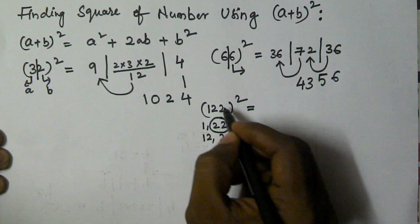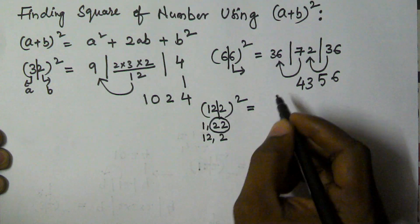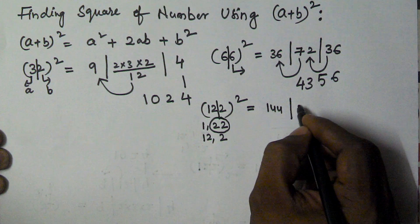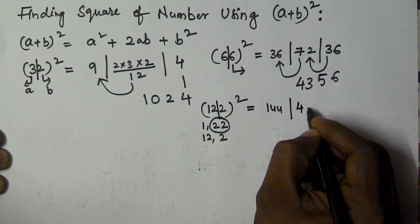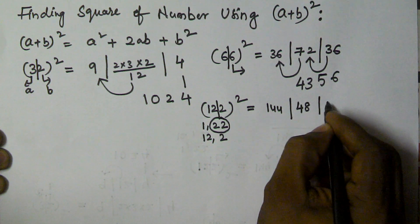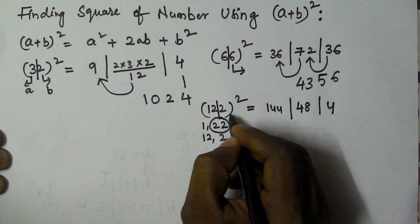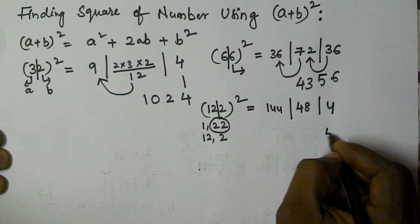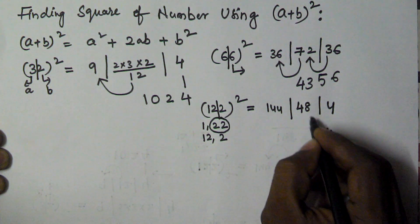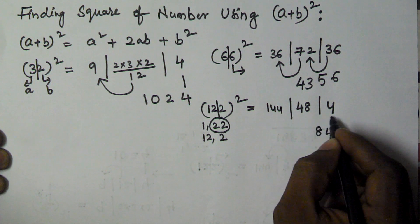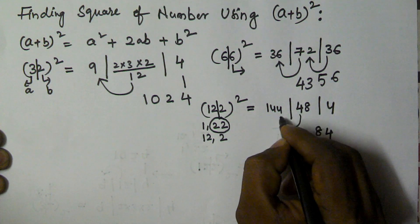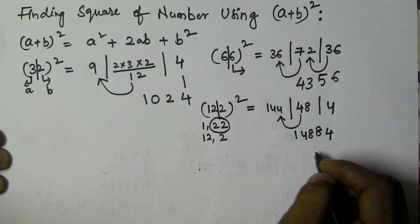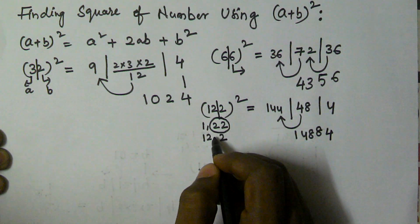So a = 12 and b = 2. Then a² = 144, 2ab = 2 × 12 × 2 = 48, and b² = 4. The right-most part contains only one digit, so I take 4 as it is, and carry the 4 from 48 to the left — that gives 144 + 4 = 148. So the right-most part of the answer is 4.